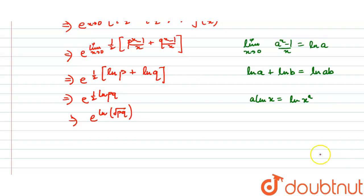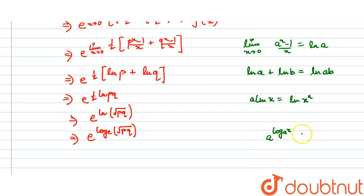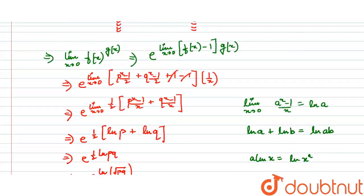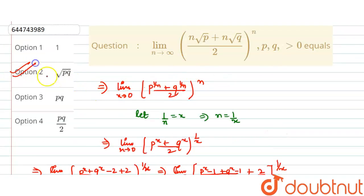Natural log is log to the base e, so we have e raised to the power log base e of root pq. Using the formula a raised to the power log base a of x equals x, since the base e matches, this simplifies to root pq. This is our final answer. Looking at the options, option 2, which is root pq, is the correct answer.